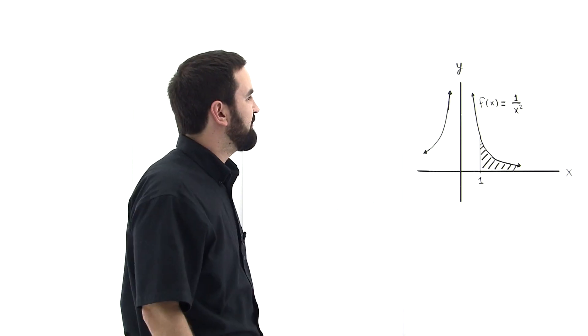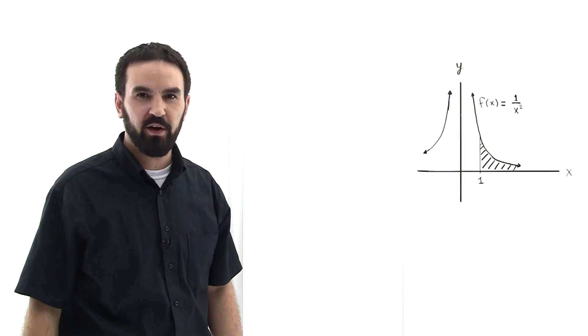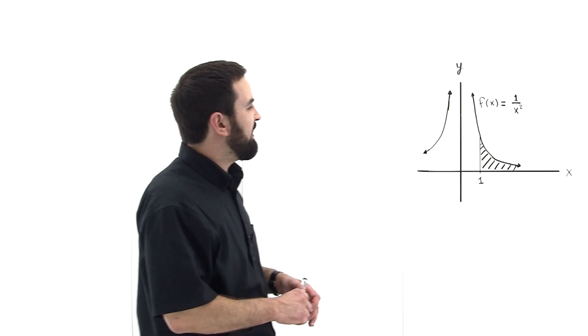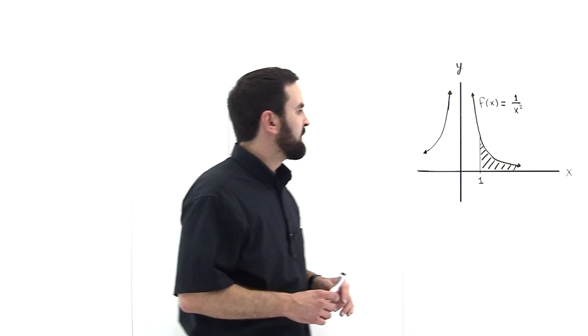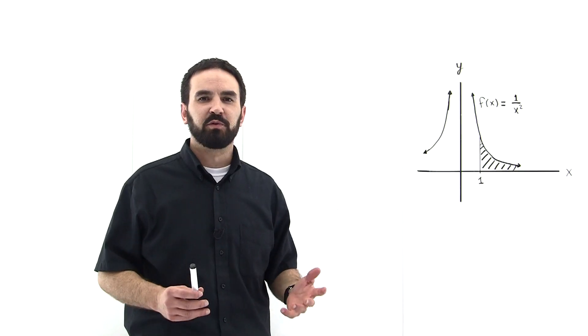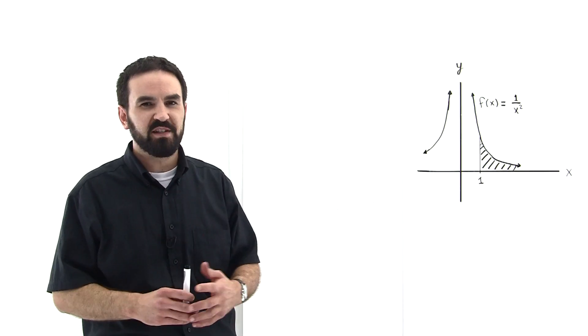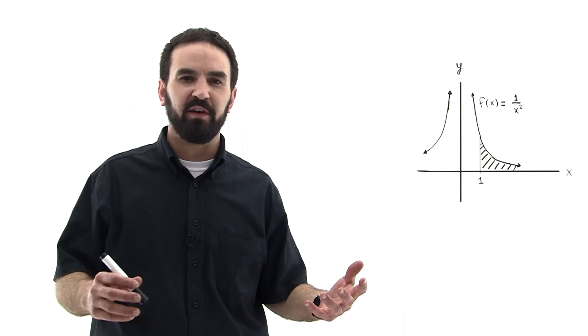Let's say we're given the function f(x) = 1/x², and we want to find the area underneath this graph from 1 to infinity. So how would it be possible to write down this number? Would this be a finite number or an infinite number?